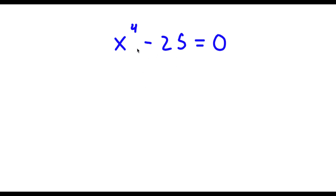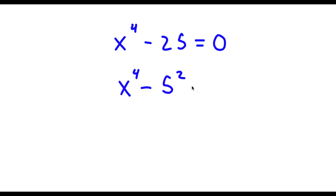Alright, so I have x to the power of 4 minus 25 is equal to zero. To start, I'm going to rewrite 25 as 5 to the power of 2. So I have x to the power of 4 minus 5 to the power of 2 is equal to zero.